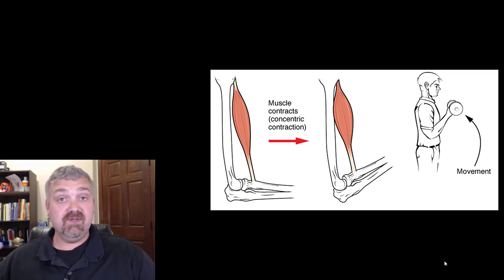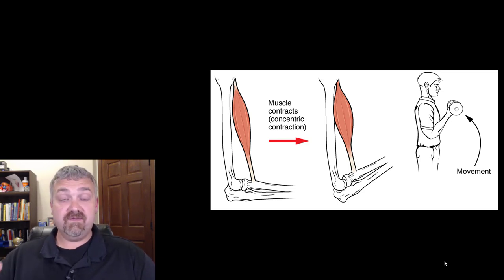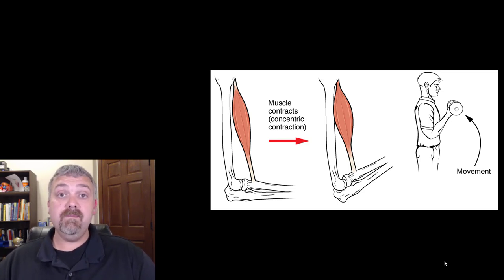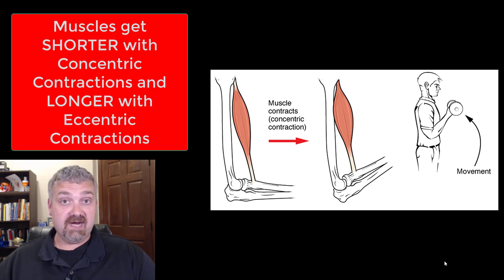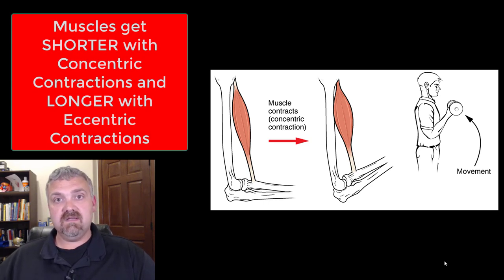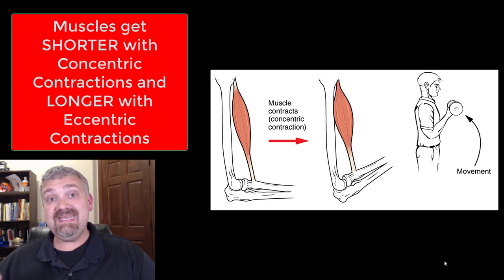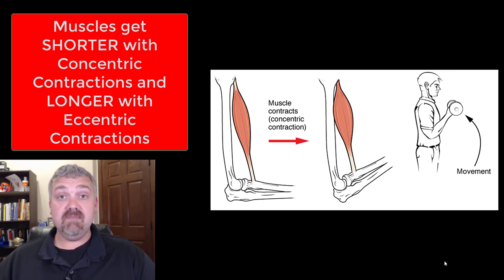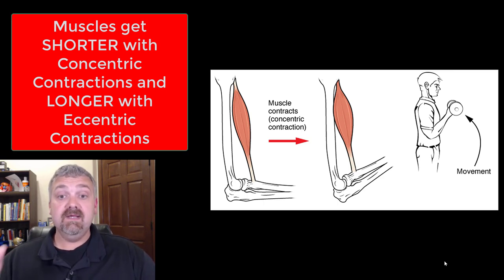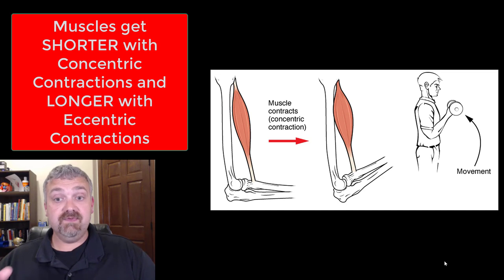Next, we have two types of isotonic contractions, so you have to know these terms as well. That would be concentric contractions and eccentric contractions. In both of them, there is a change in muscle length, so there is going to be movement.